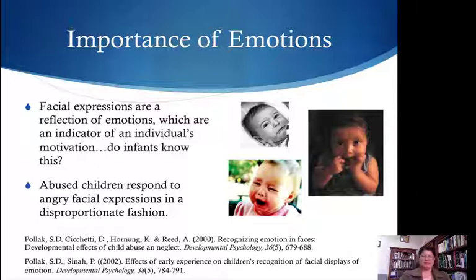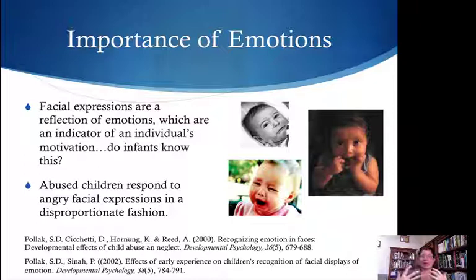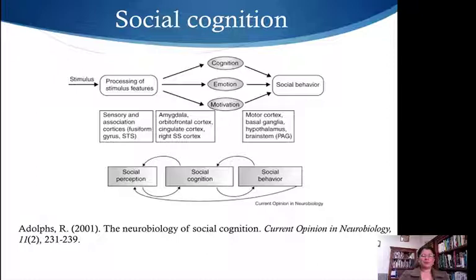From two days to seven months, human babies develop interpretation of the intention of others through emotions. What's disturbing is that — as documented by Pollak and colleagues — abused children respond in a disproportionate way to angry faces. Angry faces just set them off, because they know from experience what happens after they see that angry face — normally an angry action follows. Those kids respond really quickly because they're fearful of what will occur after that. Adolphs is probably the most prominent researcher in the area of social cognition, laying out how you go from receiving a stimulus to processing it simultaneously at a cognitive, emotional, and motivational level, resulting in actions.